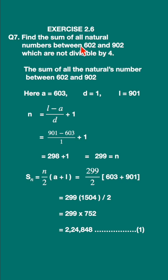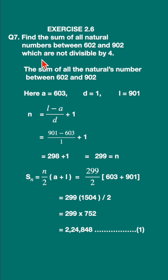First, we are going to find the sum of all natural numbers between 602 and 902. Then we are going to find the sum of all natural numbers between these two which are divisible by 4. Then we subtract the numbers divisible by 4 from the total, and that will give us the numbers which are not divisible by 4. That is the method we are going to use.